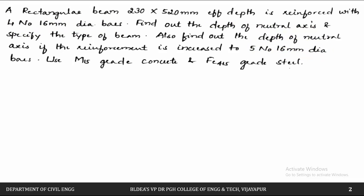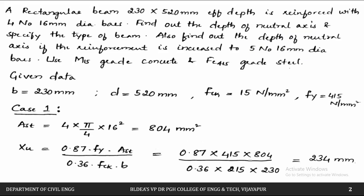Let us start solving this problem. The given data: B = 230 mm, effective depth d = 520 mm, FCK = 15 N/mm² and FY = 415 N/mm².